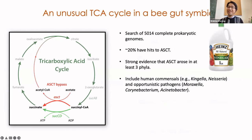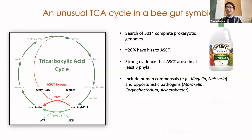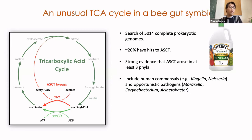We did a literature search and found that homologues of this gene had previously been found in bacteria used in vinegar production, where it was also suggested to play a role in the TCA cycle. This indicated that this unusual TCA cycle may actually be widespread. We did a bioinformatic search of all bacterial genomes at the time and found that 20% had hits to this gene. These represent species from at least three different phyla, including several prominent human commensals such as Kingella and Neisseria, as well as opportunistic pathogens Moraxella, Cardiobacterium, and Eikenella.